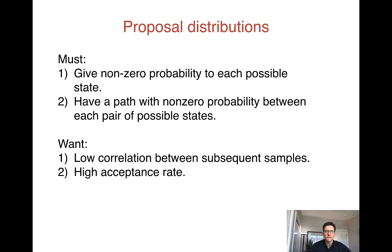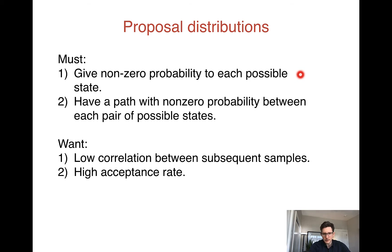What is a good proposal distribution? One thing I didn't mention before is that we are guaranteed to get samples that match the true distribution if we run MCMC long enough, as long as the proposal distribution gives a non-zero probability to each possible state. Each value of x that has non-zero probability according to our true distribution must have a non-zero probability of being proposed. If we have zero probability of proposing a state, we would never sample those values and never see them.